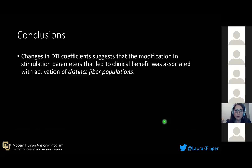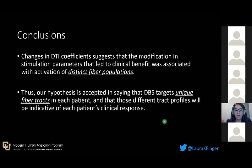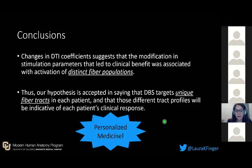In conclusion, changes in DTI coefficients suggest that modification of stimulation parameters leading to clinical benefit — the decreasing YBOCS score — was associated with activation of distinct fiber populations and thus different neural pathways. Our hypothesis is accepted: DBS targets unique fiber tracts in each patient, and those different tract profiles are indicative of each patient's clinical response. This leads to personalized medicine and personalized care, meaning there is no single optimal target that applies to every patient within this group.